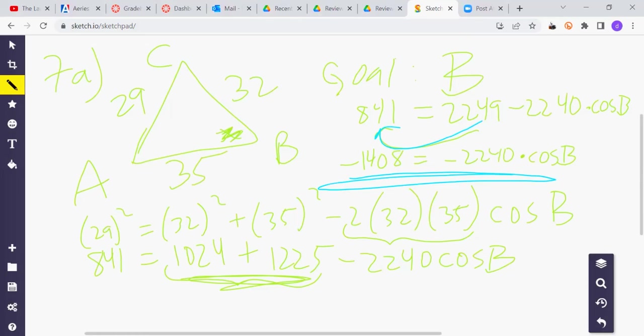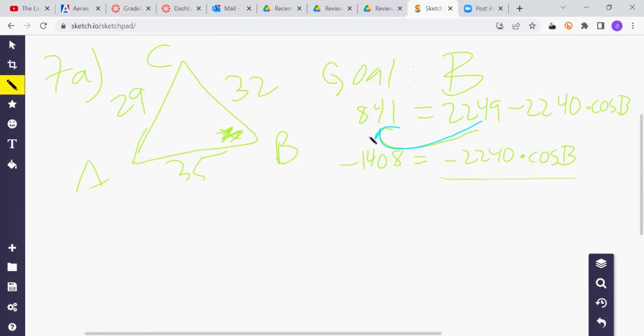So you cannot subtract these numbers. That's why we move this to this side. Currently, we are right here in blue. And now, we can divide both sides by negative 2240. And so, cosine B equals 1408 over 2240. The negatives knock out, become positive.